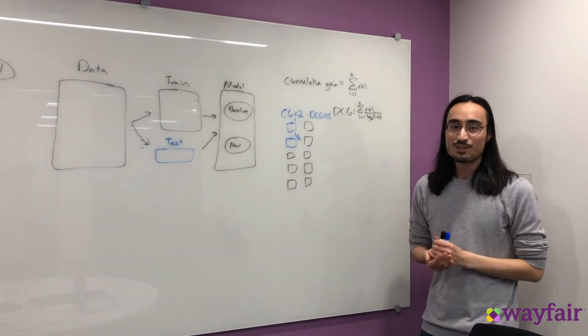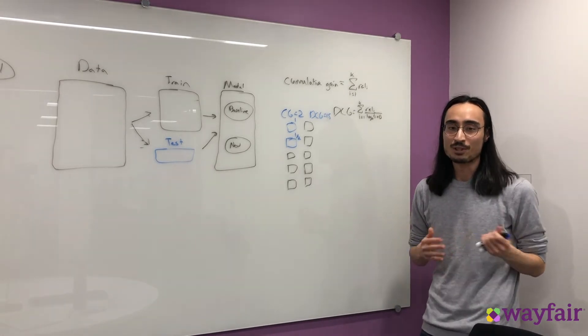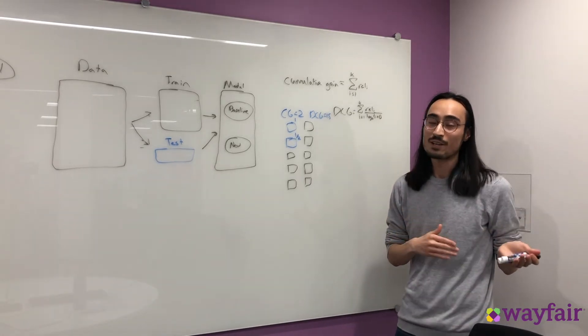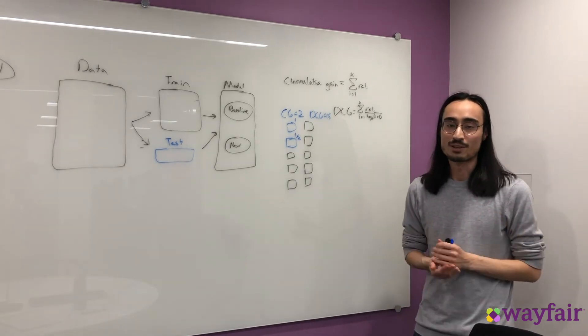So now that you have DCG, there's plenty of ways to modify this. You could think about scaling the relevance score. So maybe you assign a relevance score instead of being a binary. You assign it to 1 if they viewed it, 2 if they added to cart, 3 if they ordered, and so on.